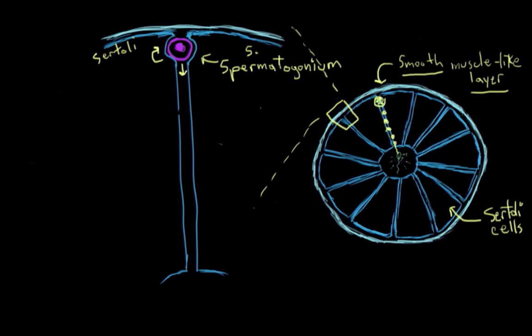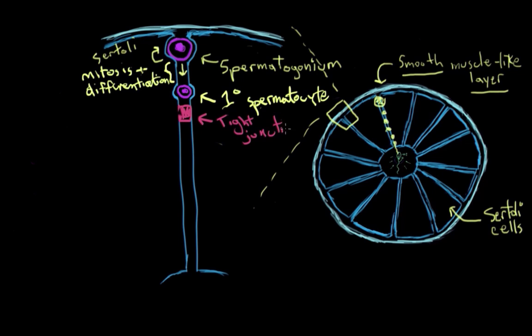So let's officially start here. Our spermatogonium will divide via mitosis, and one of the daughter cells will differentiate into a primary spermatocyte. Remember the other is going to revert back to being a germ cell, a spermatogonium. This primary spermatocyte here has to cross over this linkage between the two sertoli cells. That's called a tight junction. The tight junction effectively creates two compartments.